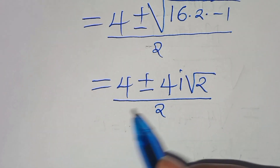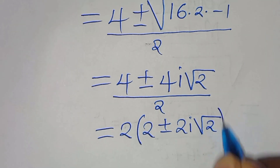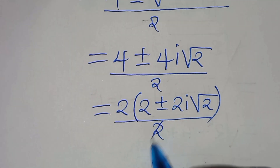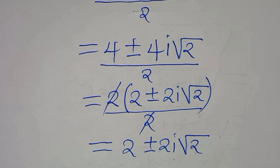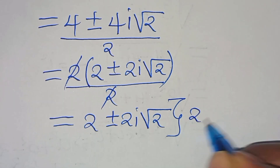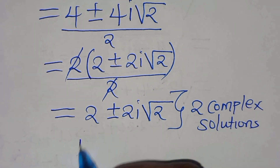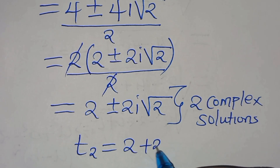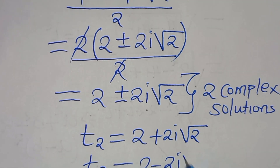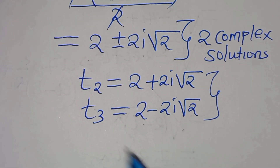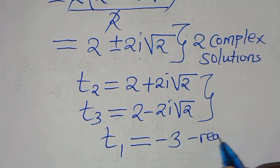We can factor out 2 in the numerator, giving 2(2 plus or minus 2i root 2) divided by 2. Simplifying, we have 2 plus or minus 2i root 2. This implies that we have two complex solutions. Therefore, we only have one real solution, which is t₁ equal to minus 3.